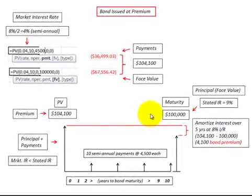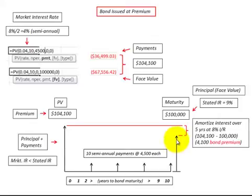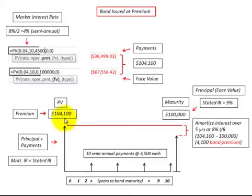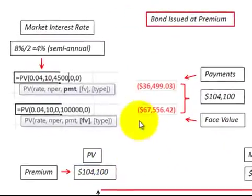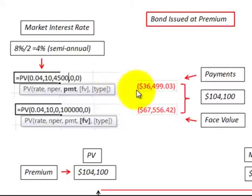Now I'm going to show the present value of a bond issued at a premium. We use the same procedure as before — discount the face or principal amount back to its present value and also discount the semiannual payments back to present value. The present value will be a combination of the principal plus the payments.